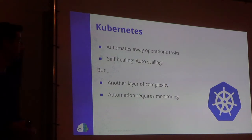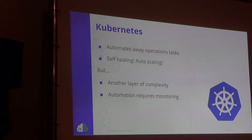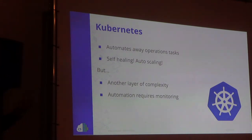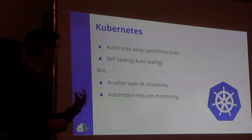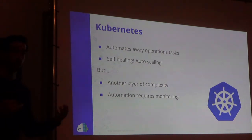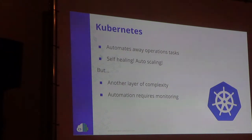Kubernetes solves some of these problems — it automates operations tasks, so if my system dies it gets restarted and I can do auto-scaling. But Kubernetes or whatever orchestration layer you use is another level of complexity — another level where you can have issues and need to do debugging. All of this automation requires monitoring; it requires data to feed into it.